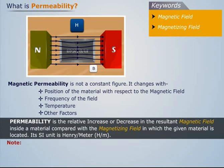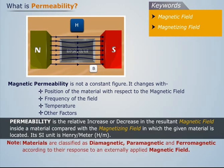Note that materials are classified as diamagnetic, paramagnetic and ferromagnetic according to their response to an externally applied magnetic field.